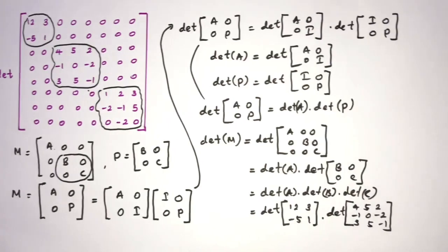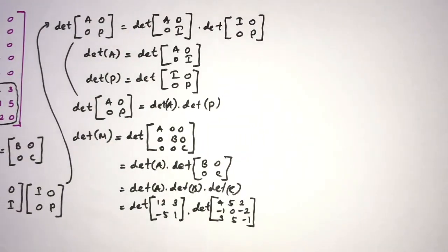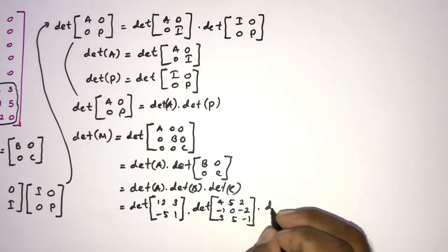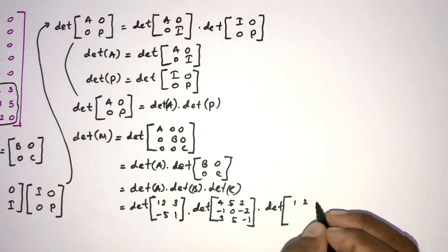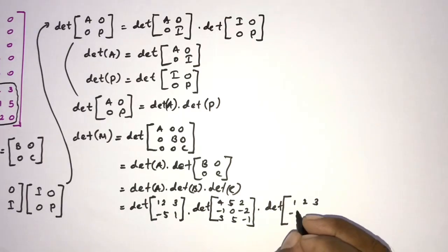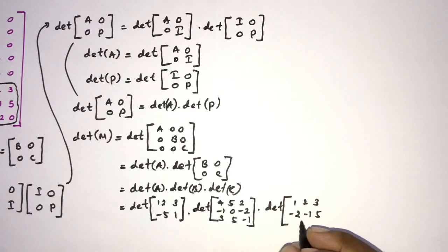det of here 1, 2, 3, then minus 2, minus 1, 5, 0, minus 2, 0.